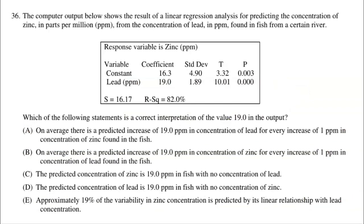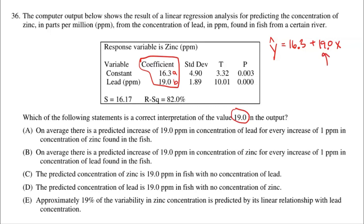This next problem says: the computer output below shows results of a linear regression analysis for predicting the concentration of zinc in parts per million from the concentration of lead in parts per million found in fish of a certain river. You need to know how to interpret one of these computer output linear regression analyses for the exam — they're actually really easy. The numbers that matter most are the very first numbers in the coefficient column, which go in alphabetical order: A on top of B, your Y-intercept and your slope. So the equation is Y-hat equals 16.3 plus 19.0 times X.